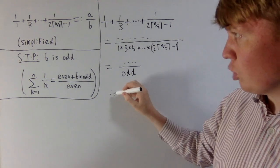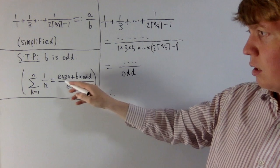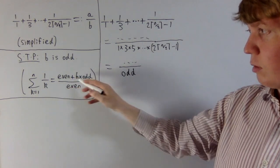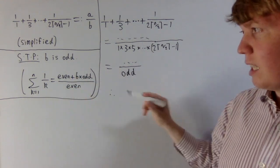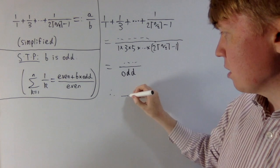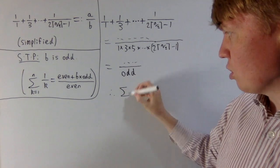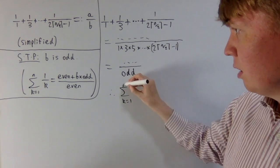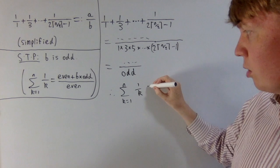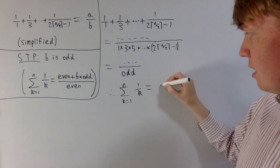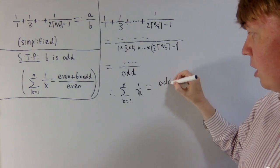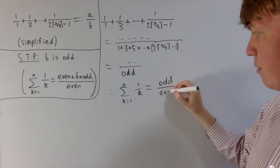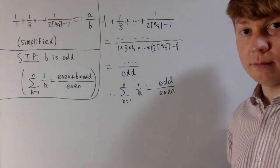We've shown that b is odd, so our sum equals even plus odd times odd over even, which tells us that once everything has been simplified, the sum from k equals 1 to n of 1/k is indeed of the form an odd number divided by an even number after simplifying.